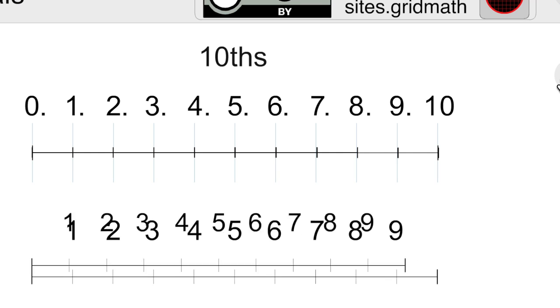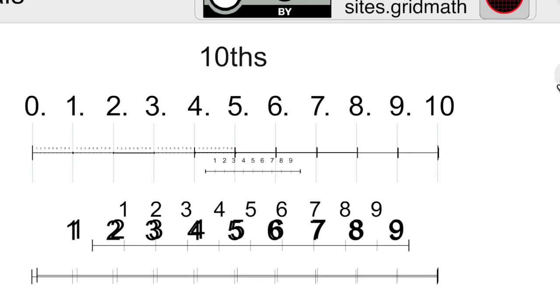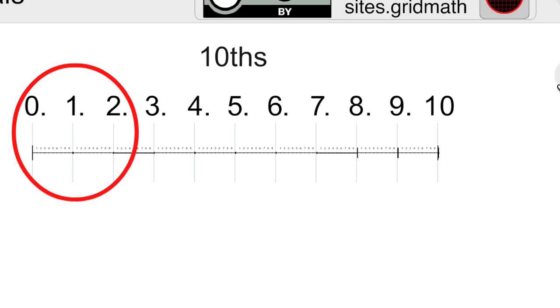On the main number line you will fill in all the intervals with the subdivisions and now the focus will be from 0 to 2 and I'll zoom out a little bit on that.